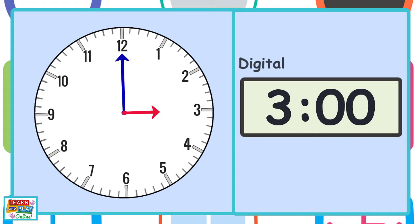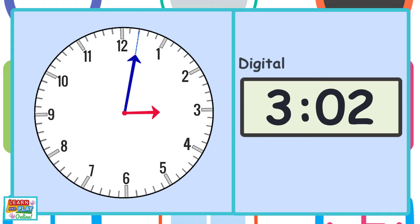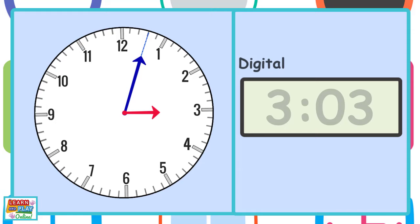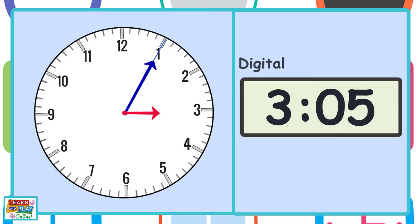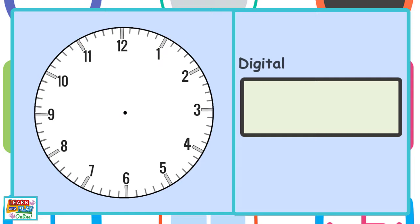The time on the analog clock is currently 3 o'clock. Watch the minute hand closely as it moves to the next minute. You can see that when the minute hand is pointing at the line at the number 1, that shows that 5 minutes has passed the hour. Using this strategy of counting by increments of 5 minutes will be a much faster way to read time.